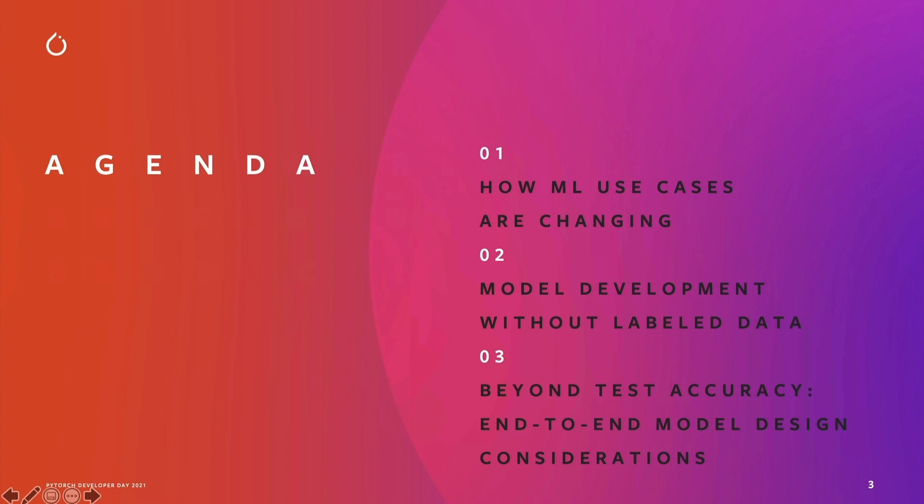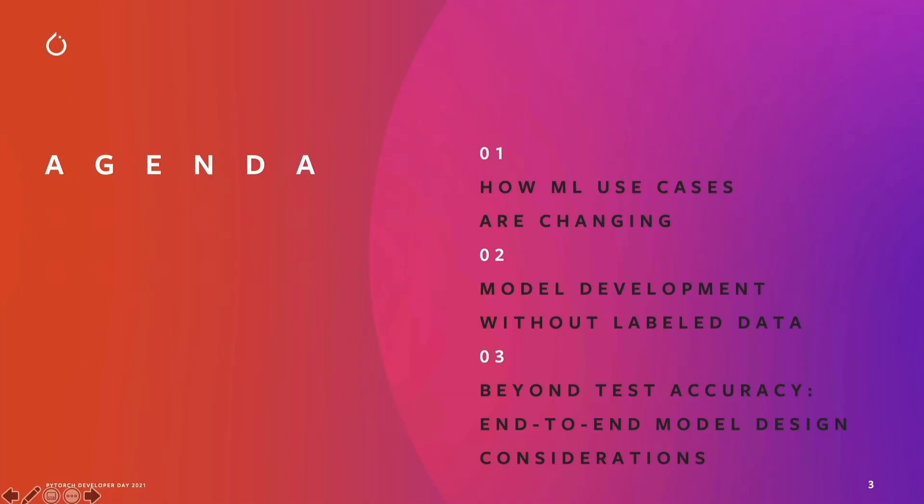Second, I want to talk about this idea of model development without labeled data. You often hear stats like 90% of machine learning projects never make it to production. There are multiple reasons for that, but I suspect one reason is that oftentimes a machine learning team will hit a point where they say they don't have labeled data and therefore can't move forward. I want to share some strategies to expand the scope of what you do in that context.